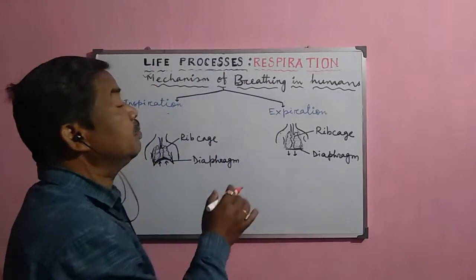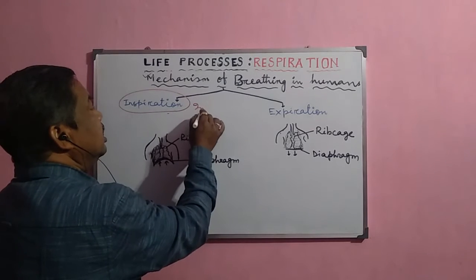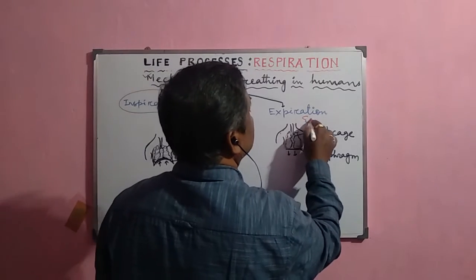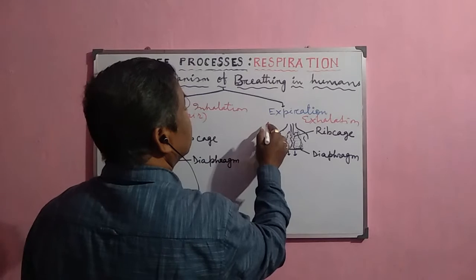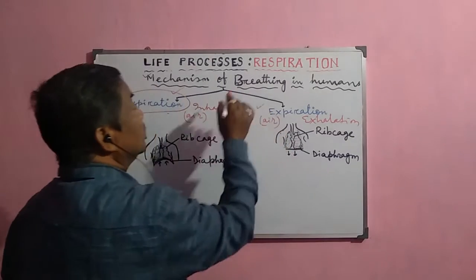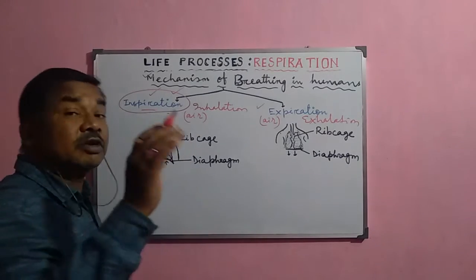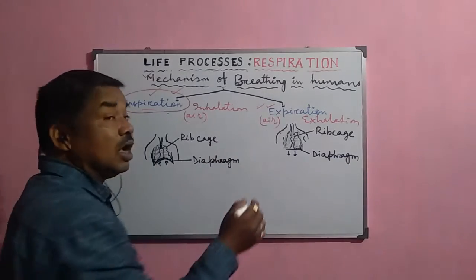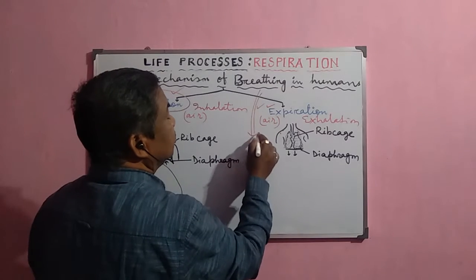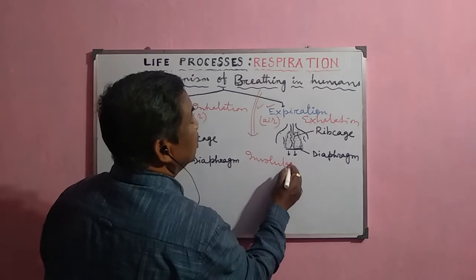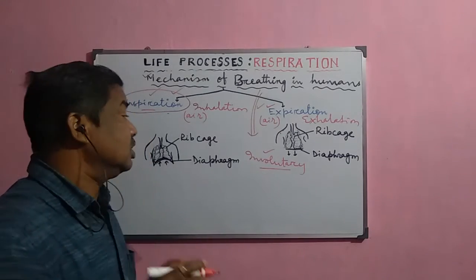Now, the mechanism of breathing in human beings involves inspiration and expiration, or inhalation and exhalation. One breathing cycle completes in two phases: intake of air (inspiration) and giving out air (expiration). This breathing process is actually an involuntary process — it goes on automatically. Even when we are sleeping, breathing continues. It is controlled by the autonomic nervous system.